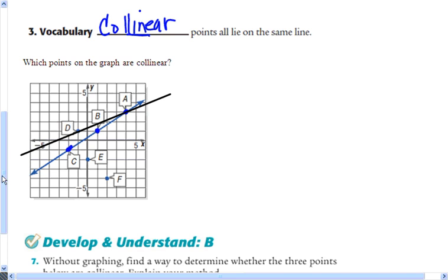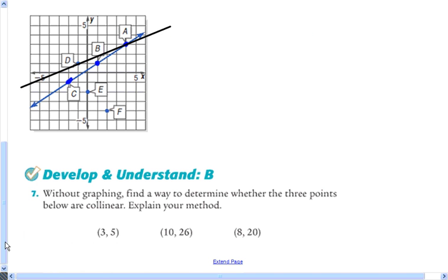So what we're going to do is try and find a way, without graphing, to determine whether the three points below are collinear. And then we're going to explain our method.